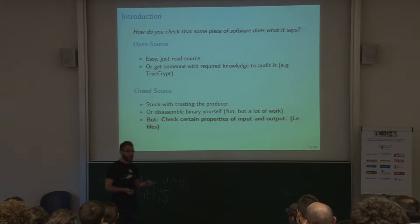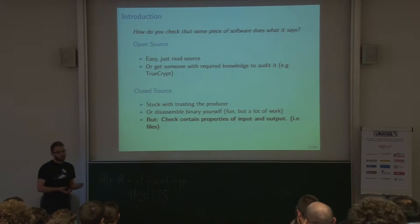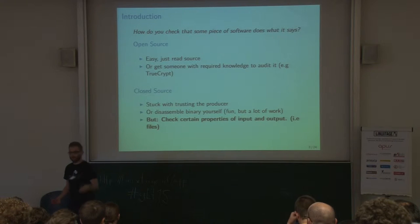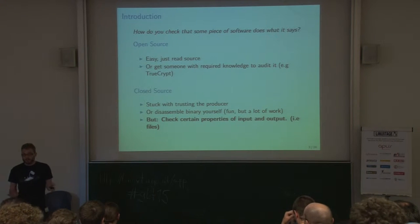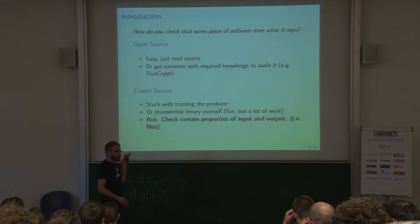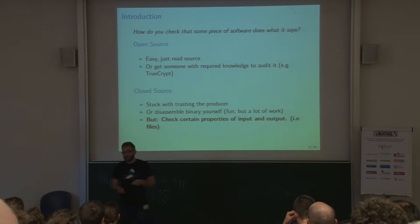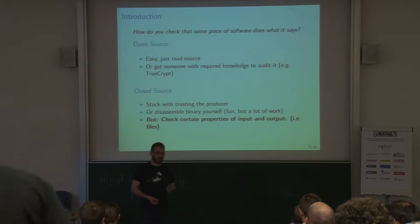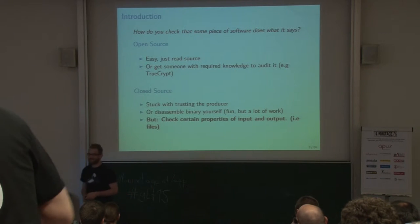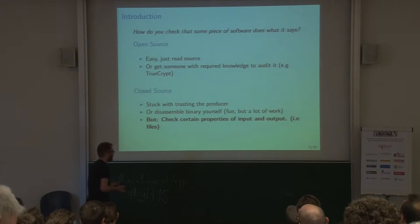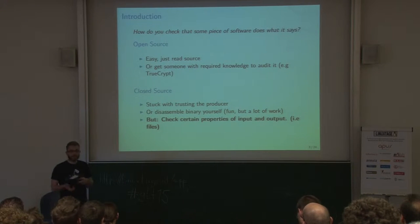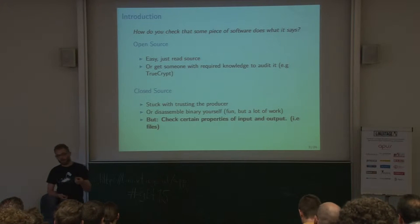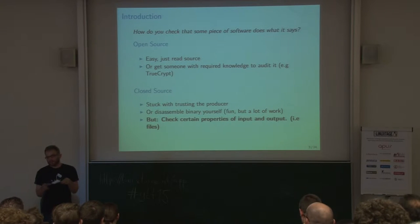If you have not enough knowledge, then you hire someone like us, and we do it for you. Or there are public projects like the TrueCrypt audit, which was finished about a month or two ago, where this is done in public. With closed source, it's harder. You basically have to trust, or you start reverse engineering — you get out the hard tools, disassemble it, read a lot of assembler code, and try to find out what it does. Or, especially with encryption software that encrypts files, you can check the input and output and see if what you put in looks good on the other end.